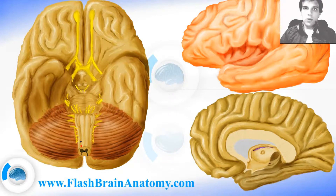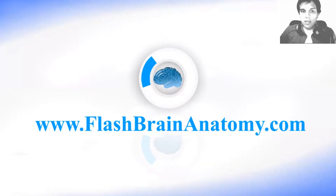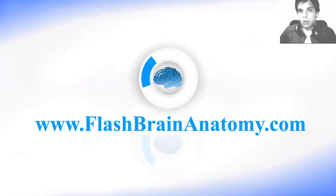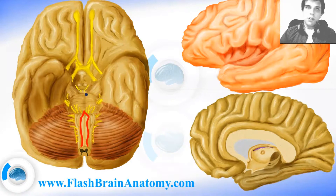First, we have the two vertebral arteries entering the skull through the foramen magnum. These two arteries join here and create one artery called the basilar artery. The basilar artery goes in the basilar sulcus on the pons.